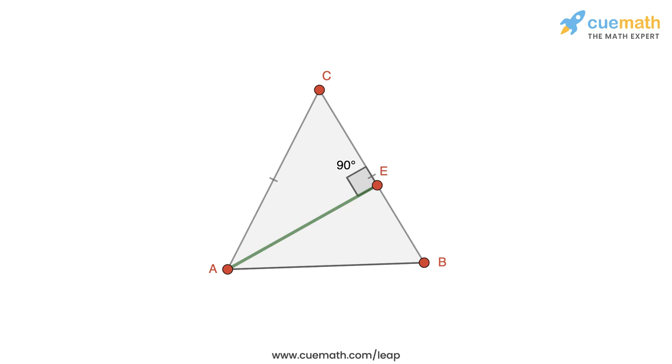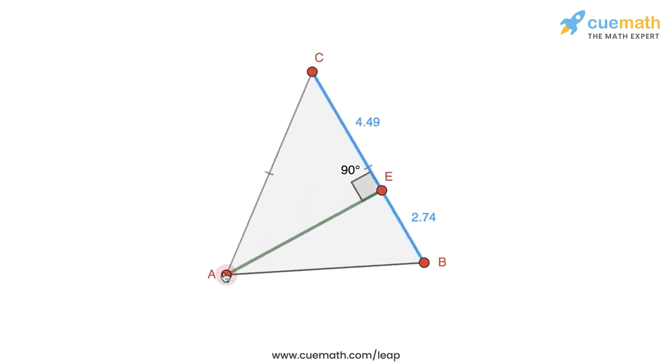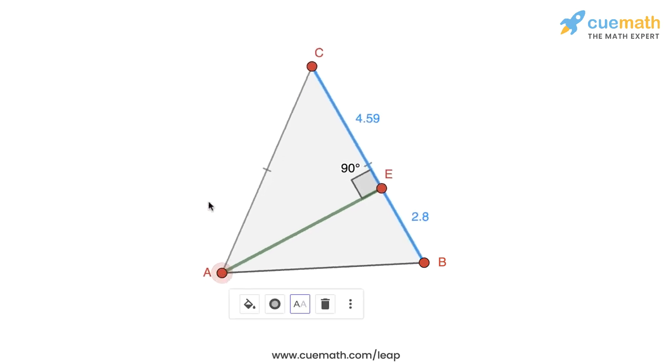So BE right now is 2.96 and CE is 3.64. And in general, even if I move around the vertices of the triangle, we can see that BE and CE are not equal. So what this basically means is that the altitude drawn from A, which is AE, is not the median drawn from A, and that's because E is not the midpoint of BC. So in this particular situation, the altitude and the median from A will be different.